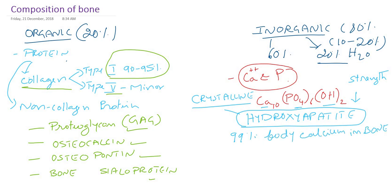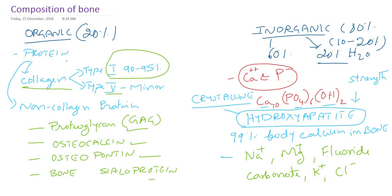Our bone and teeth are rich in calcium and phosphorus. Apart from calcium and phosphate, we also have other inorganic components. Bone also contains sodium, magnesium, fluoride, carbonate, potassium, zinc, selenium, and many other inorganic components, but the major part is calcium and phosphorus. They are present in the form of crystalline hydroxyapatite, which is actually the reason for the strength or resilience of the bone.